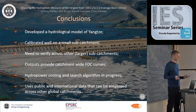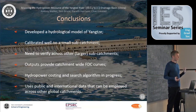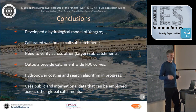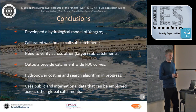To conclude: we've developed a hydrological model of the Yangtze that is calibrating well against objective functions and visual checks. We need to verify across larger sub-catchments, which we're doing now. The outputs — good flow duration curves — are used for the hydropower search and costing algorithm, currently under development. Importantly, all this uses international public data, meaning these tools could be deployed across catchments worldwide; the Yangtze is effectively a large test case. This project is in collaboration with Dr. Tom Bruce, Gareth Harrison from Energy Systems, and Clive Grattan from Physics.